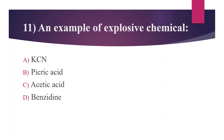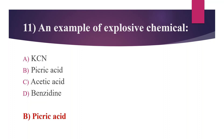Eleventh question: an example of an explosive chemical. Option A: KCN (potassium cyanide). Option B: picric acid. Option C: acetic acid. Option D: benzidine. The answer is Option B, picric acid. When hydrated, picric acid is typically safe to handle, but it becomes a powerful explosive when dry. Ensure picric acid is kept under a layer of water. KCN is a highly toxic chemical. Acetic acid is corrosive. Benzidine is a carcinogenic chemical.